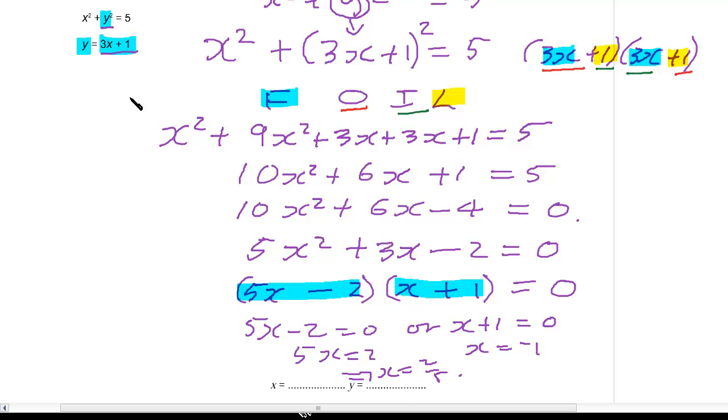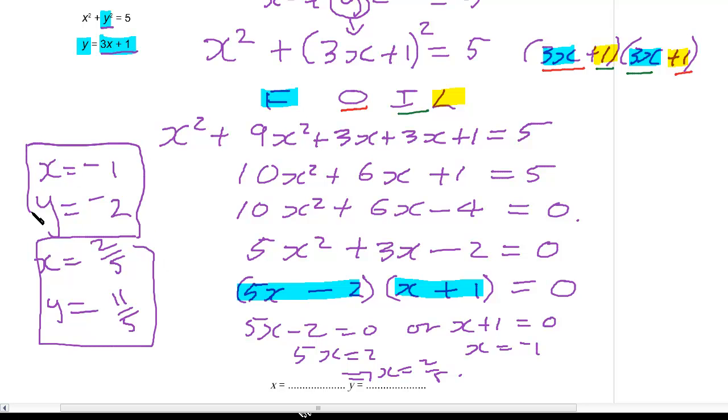Now we just need to find out the y values of this. So we've got x equals 2 fifths and x equals minus 1. So y will equal, when x equals minus 1, y will equal minus 3 plus 1 which gives us minus 2. And x when it equals 2 fifths that will give us a y value of 3 times 2 fifths which is 6 fifths plus 1 which gives us 11 fifths. And those are our two sets of answers.